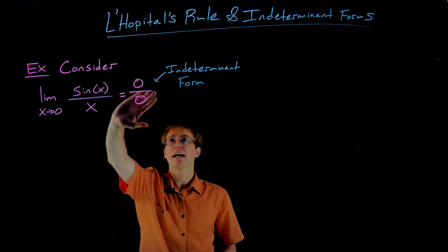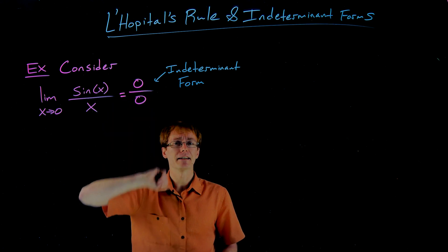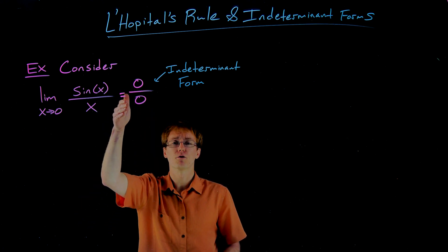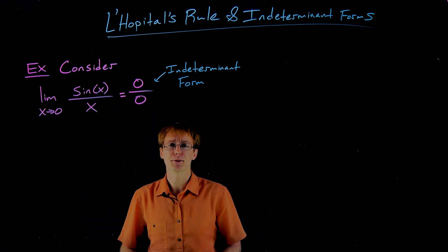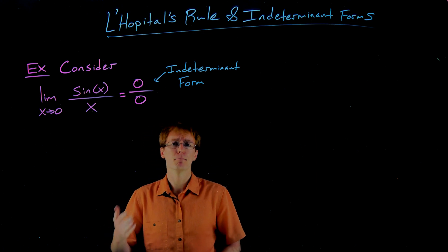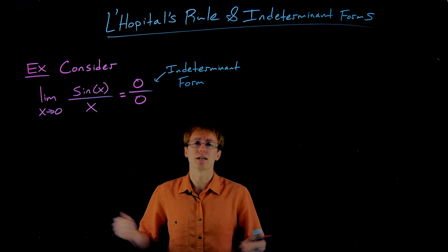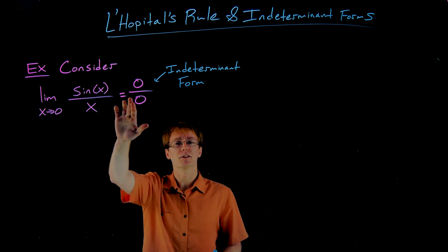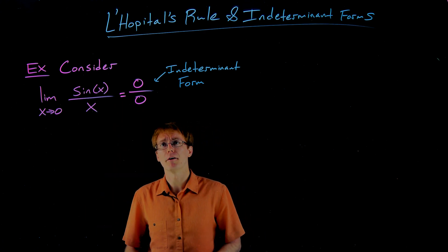One thing we've learned before is if we have zero divided by any non-zero constant, like zero over four, or zero over negative three, that always evaluates to zero. That's basically just saying, multiplying by zero, zero's everything out.